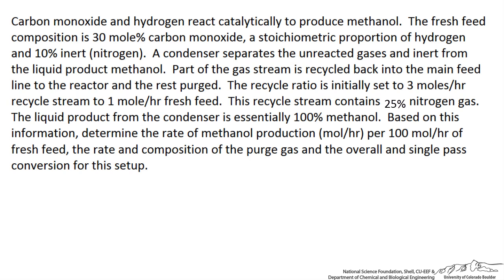We are making methanol by reacting carbon monoxide and hydrogen catalytically in a reactor. The fresh feed composition is 30% carbon monoxide, a stoichiometric proportion of hydrogen, and 10 mole percent nitrogen as an inert. The reactor is not efficient, so we separate the methanol from the unreacted gases using a condenser and recycle the gases back into the main feed line. The recycle ratio is 3 moles per hour recycle stream to every 1 mole per hour of fresh feed, and the recycle stream contains 25% nitrogen. The liquid product from the condenser is essentially 100% methanol.